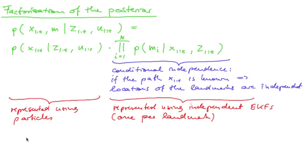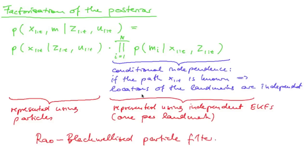Since those landmark probabilities are independent of each other, we represent them using independent Gaussian distributions — one extended Kalman filter for each landmark. The distribution of our robot's paths is represented using a particle filter, and for each particle we represent the remaining part of the posterior by a set of Gaussian distributions, one per landmark. This approach is also called a Rao-Blackwellized particle filter. You can find a proof in the Probabilistic Robotics book by Thrun, Burgard, and Fox.